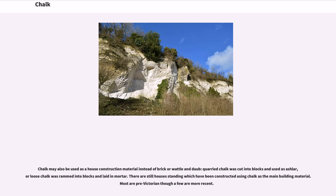Chalk may also be used as a house construction material instead of brick or wattle and daub. Quarried chalk was cut into blocks and used as ashlar, or loose chalk was rammed into blocks using mortar. There are still houses standing which have been constructed using chalk as the main building material.